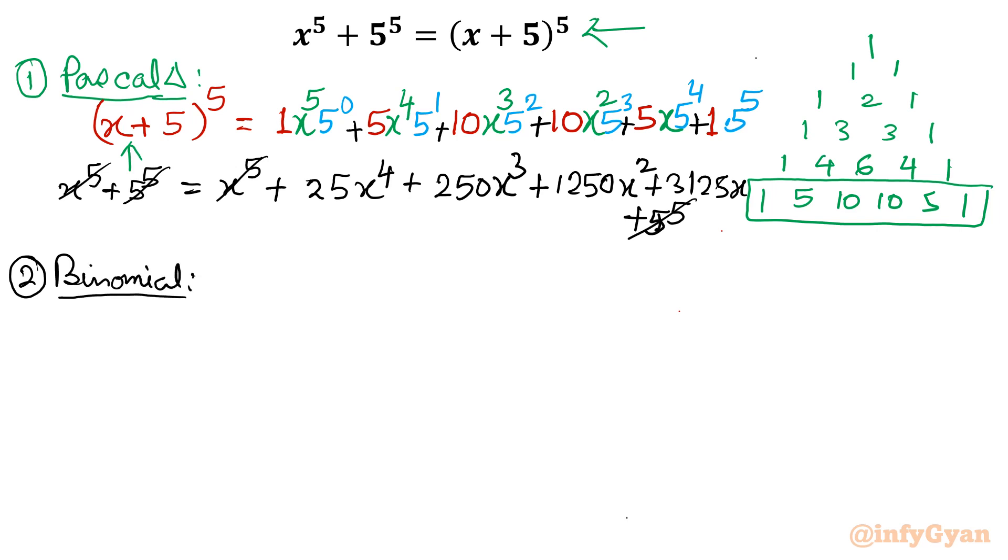It is (x+5)^5. Binomial expansion is 5C0 x^5 5^0 + 5C1 x^4 5^1 + 5C2 x^3 5^2 + 5C3 x^2 5^3 + 5C4 x 5^4 + 5C5 x^0 5^5. The first term is in descending order and second power is in ascending order.